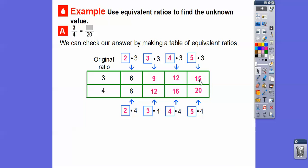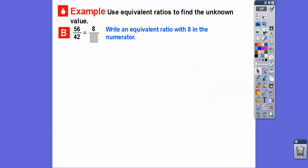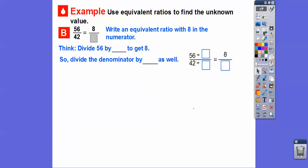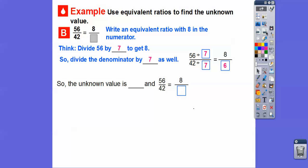This time, the unknown is in the denominator. We have 56 over 42, and we want to make 56 become 8 in the numerator. We think: 56 divided by what equals 8? That's 7. So we divide the denominator by 7 also. 56 divided by 7 equals 8, and 42 divided by 7 equals 6. So 8 over 6 is the same ratio as 56 over 42. The unknown value is 6.